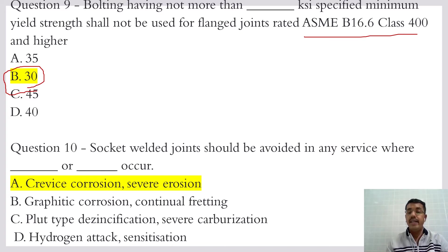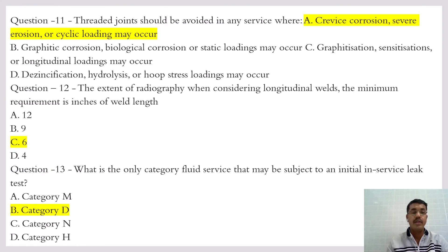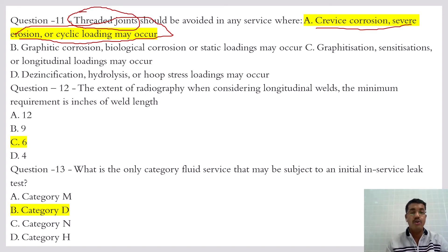Socket welded joints should be avoided in certain services. Socket welded joints are usually not used in severe conditions — where there is crevice corrosion and severe erosion — as the socket welded joint is a weaker type of joint. Similarly, threaded joints should be avoided where there is crevice corrosion, severe erosion, or cyclic loading, as these are weaker types of joints.